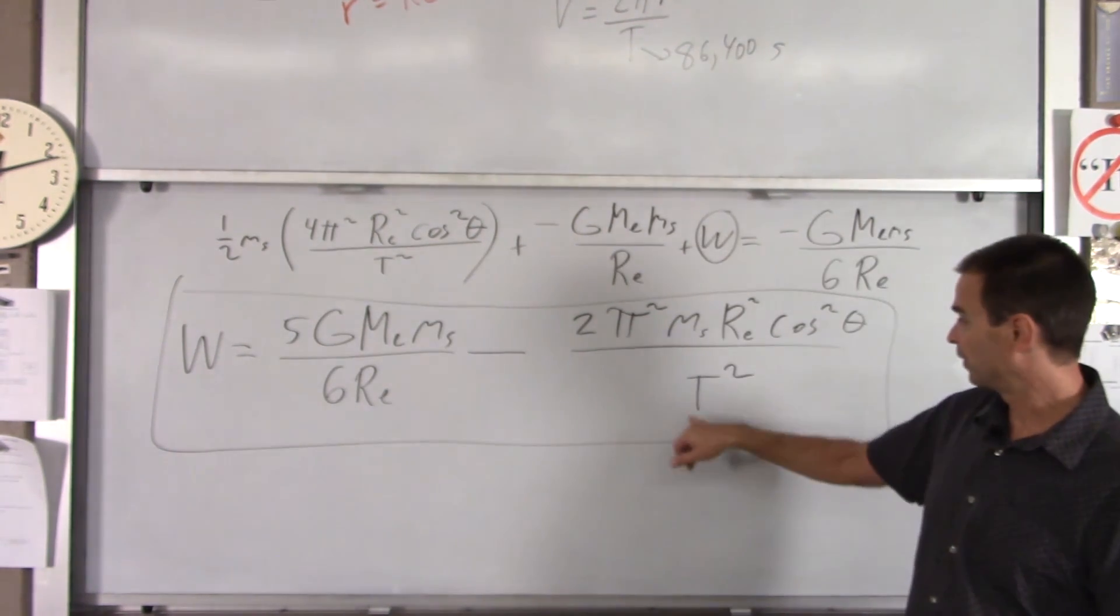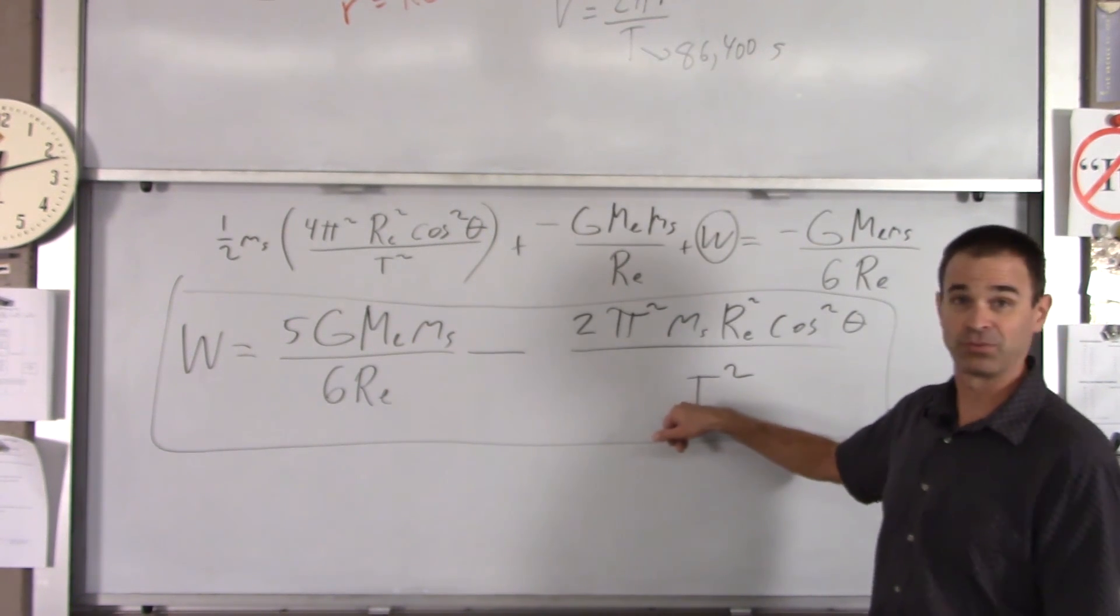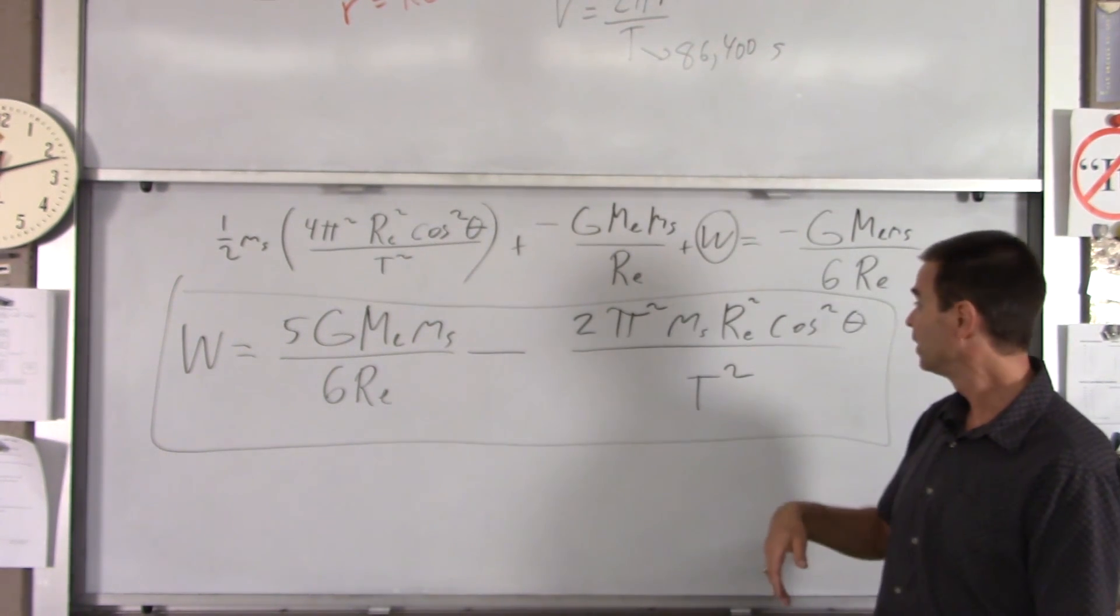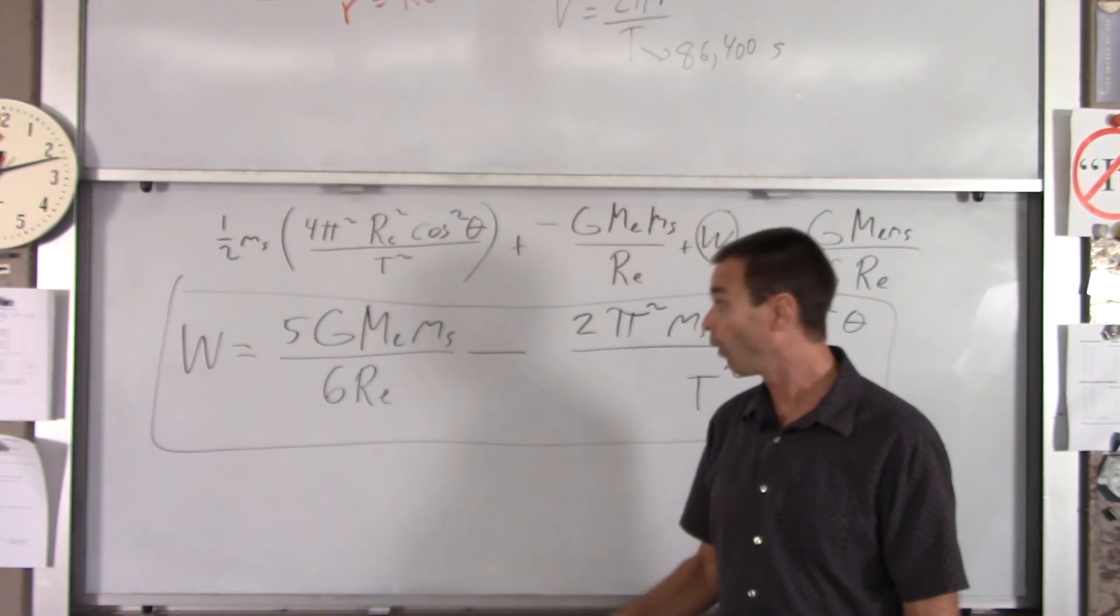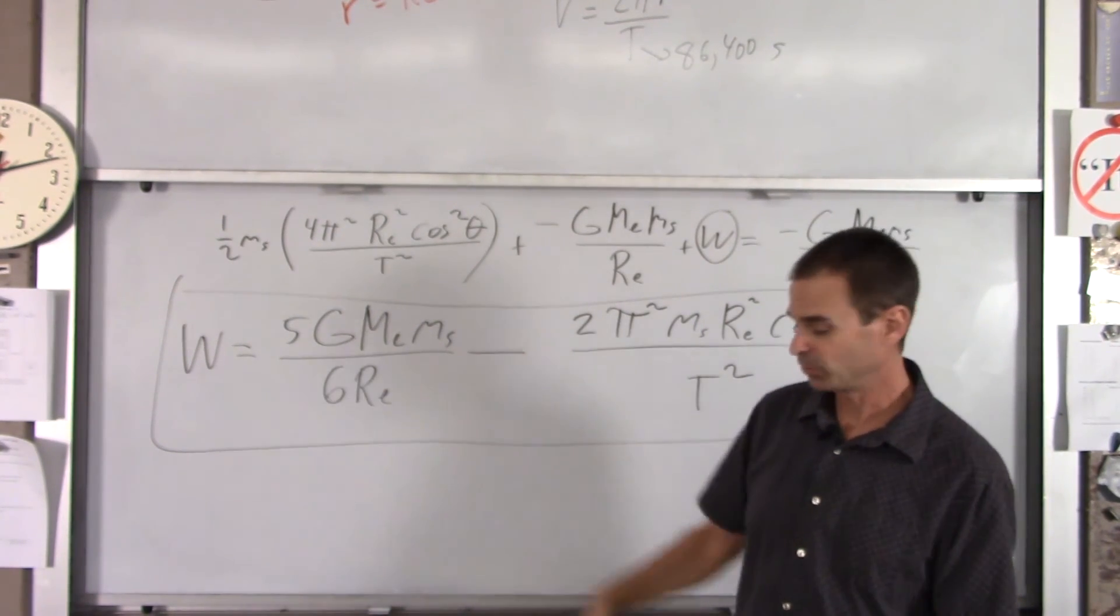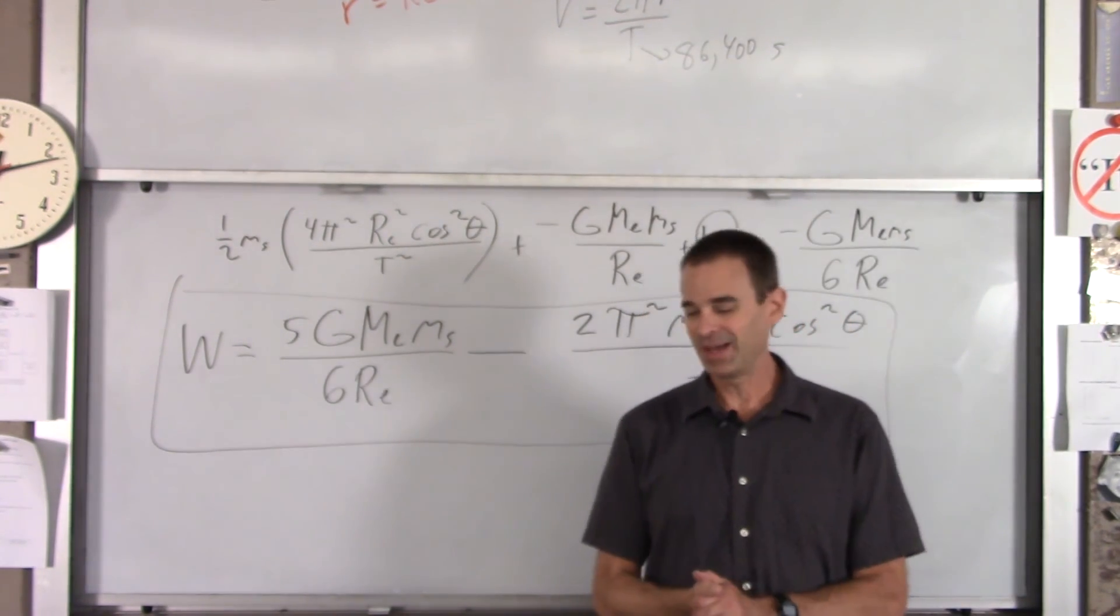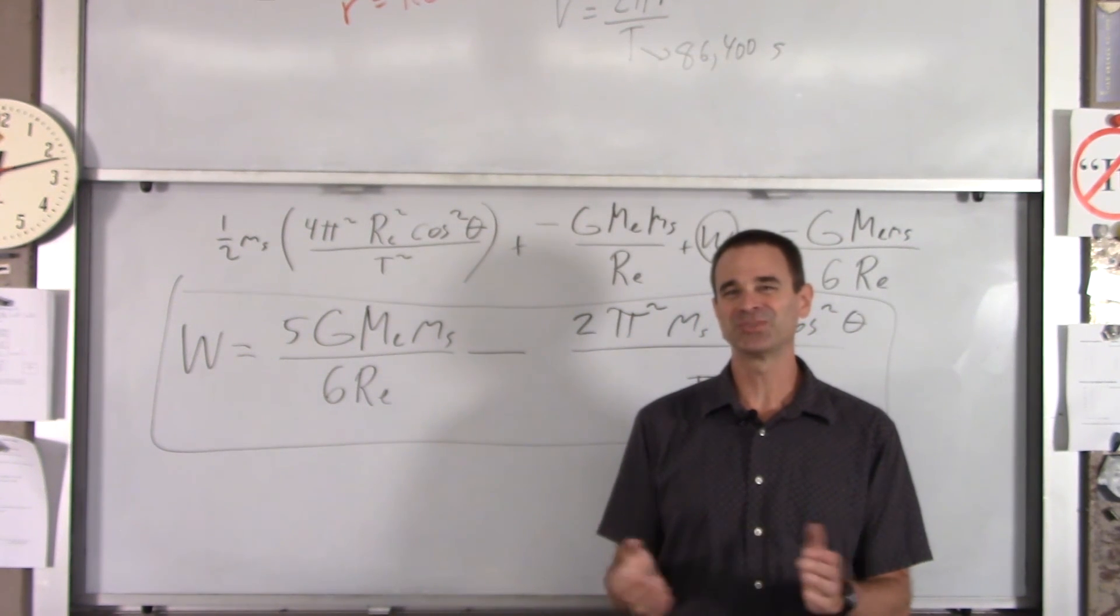So I hope that was useful. And again, if they gave you numbers, for instance, we know time is 86,400 seconds for the Earth to rotate once. And all the other numbers you know or would be given, like the mass of the ship, you'd have to obviously know. So I hope that was helpful and enjoy Universal Gravitation.